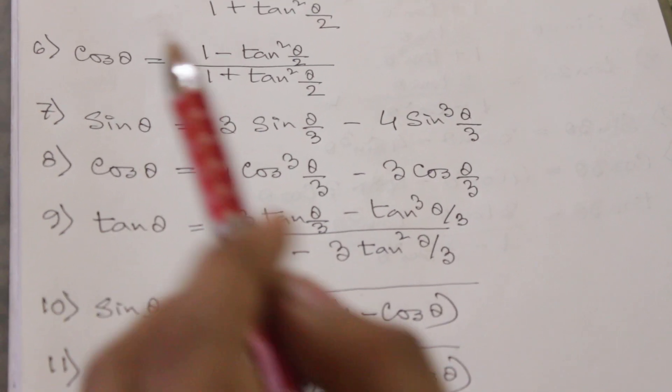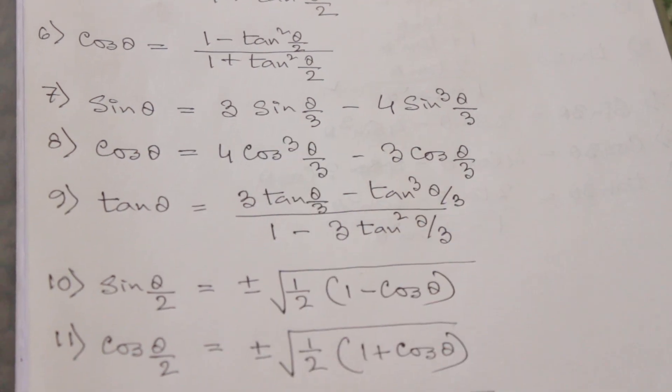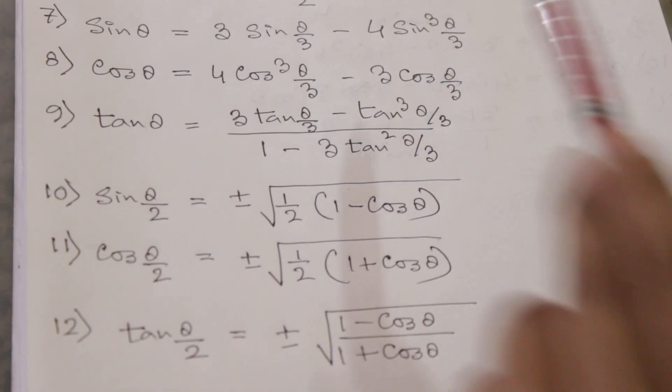Number seven is sin θ which is equal to 3 sin θ/3 minus 4 sin³ θ/3.